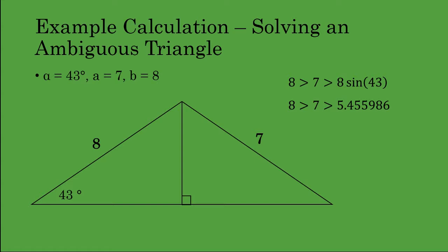Now, the only case that's really a step up in terms of challenge level is the case where two triangles are possible. So I'll show you a robust procedure to follow in order to solve these cases. Let's say we have an ambiguous case where we have side lengths 7 and 8, and opposite the side length equal to 7 we have a known angle of 43 degrees. The first thing to do is compare 7 — the length of that opposite side — to basically 8 times the sine of alpha, where alpha is 43 degrees.